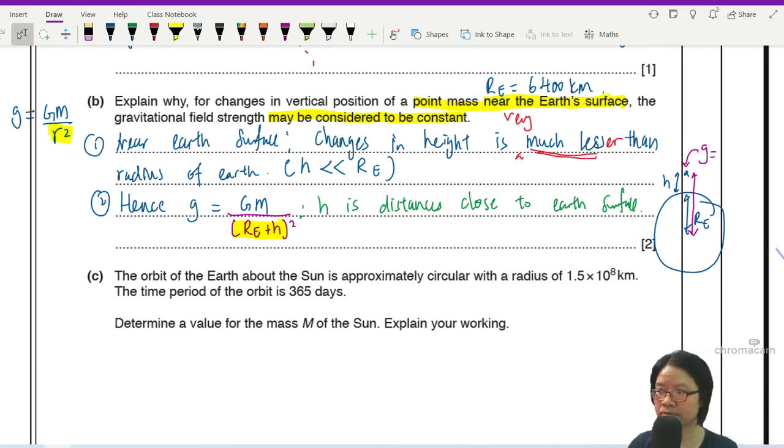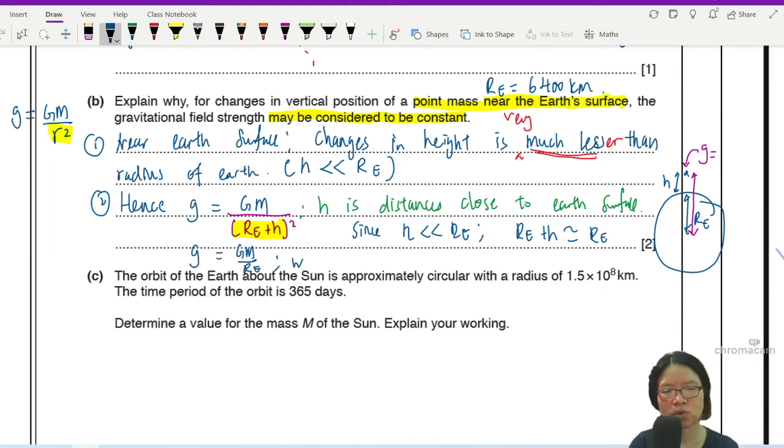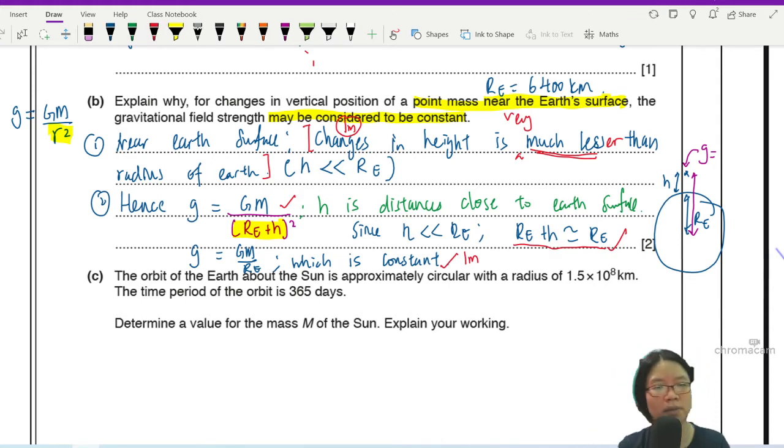Equation that I'm using is gravitational field strength is GM over R square. But now my R is RE plus H because you are H above, near the Earth's surface. So then I will just write here where H is distance close to Earth's surface. So since H is much lesser than RE, then I can say RE plus H will be more or less equal to RE. So because of this, G will now go back to GM over RE square, which is constant. This is M1, and the second mark is A1.